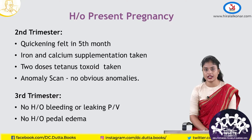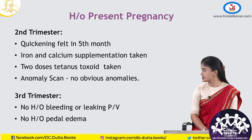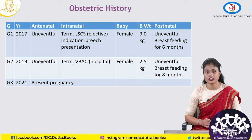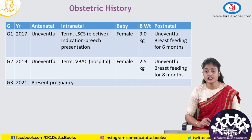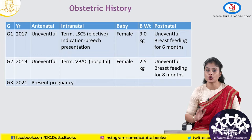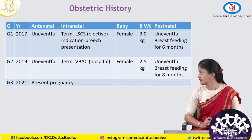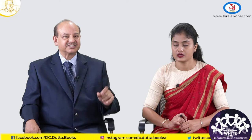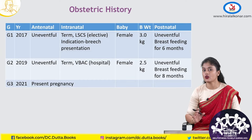Coming to her obstetric history. Her first pregnancy was in the year 2017, antenatal period was uneventful. Intranatally, she underwent a caesarean section — an elective caesarean done in view of breech presentation. It was a female baby, 3 kgs birth weight. Postnatally it was uneventful and she breastfed the baby for 6 months. How significant is this elective caesarean for breech presentation? Breech presentation is a non-recurrent indication for caesarean section.